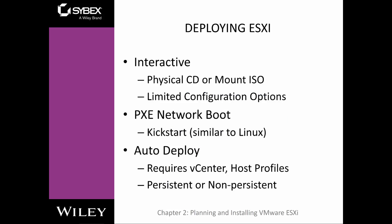Moving on to the deploying of ESXi — we can do this one of three ways. We have an interactive install, which is pretty much putting the medium in the server and installing it like a traditional installation. We have a network boot, which is a PXE boot. Or we have auto-deploy. If you're familiar with VMware 5 or 5.5, auto-deploy sometimes had some issues, and you had to have certain policies and a profile set up. Auto-deploying has gotten better, and we're going to talk more about it in Chapter 3.